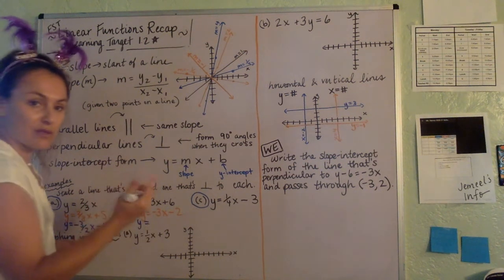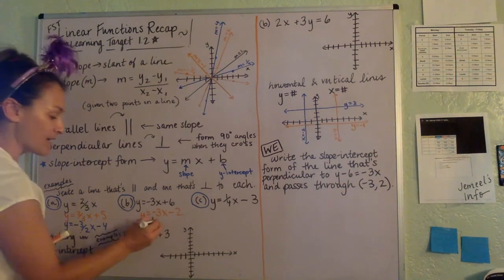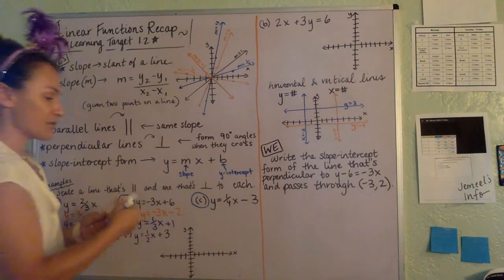And then 3, which is really 3 over 1, we'll flip that over so it's 1 over 3X and then plus whatever. Last one.